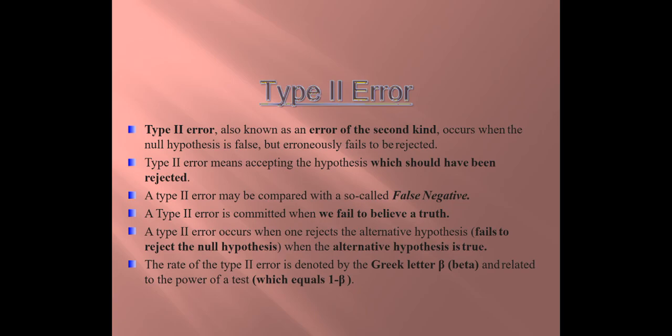A Type 2 error may be compared with a so-called false negative. Suppose we have a patient with signs and symptoms of COVID-19 and we send his test for laboratory analysis. If he is really having COVID-19 but still the laboratory test confirms he does not have the disease — even when the patient is actually having the disease, the test says it is negative — that will be considered a false negative. So Type 2 error can be compared to false negative. Type 2 error is committed when we fail to believe a truth. Type 2 error occurs when one rejects the alternative hypothesis and fails to reject the null hypothesis.